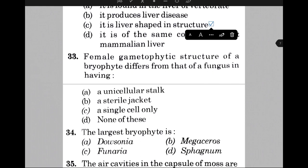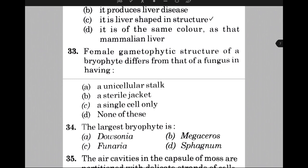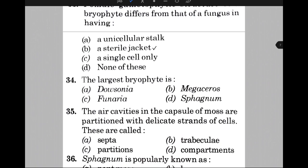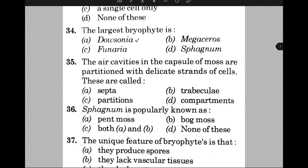The female gametophytic structure of a bryophyte differs from that of a fungus in having — the answer is B, that is a sterile jacket. The largest bryophyte is — the answer is A, that is Dawsonia. The air cavity in the capsule of a moss is partitioned with delicate strands of cells; these are called — the answer is B, that is trabeculae.